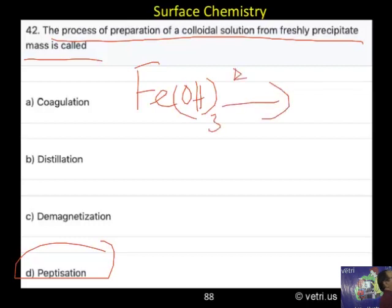Ferric hydroxide - when you add ferric chloride, you get a colloidal solution.